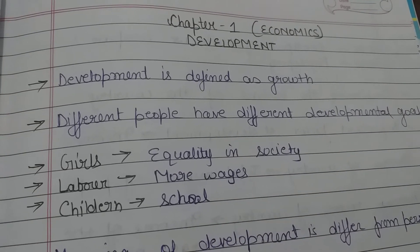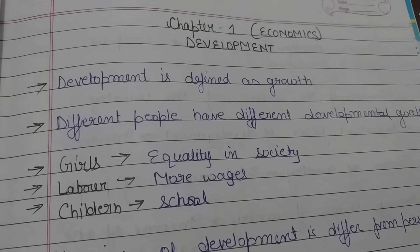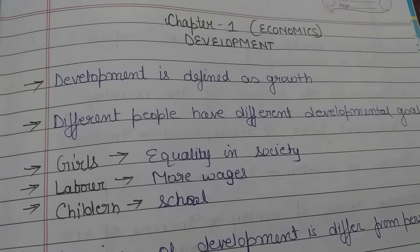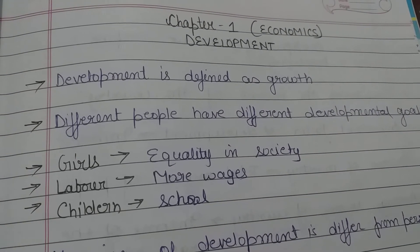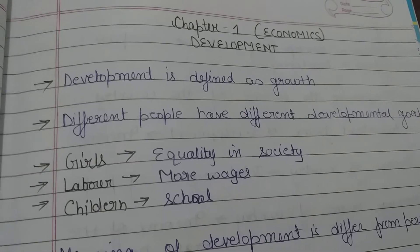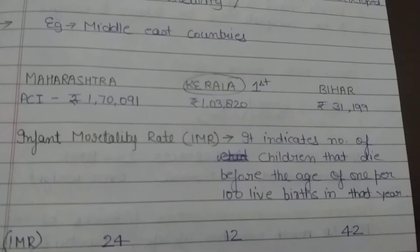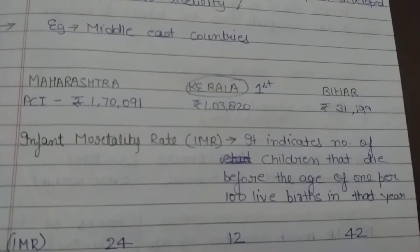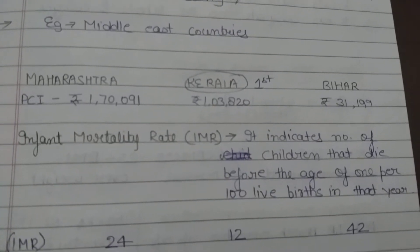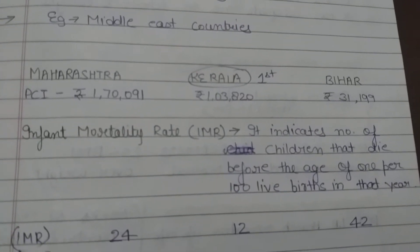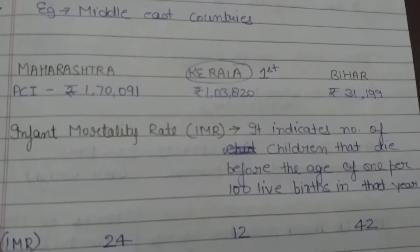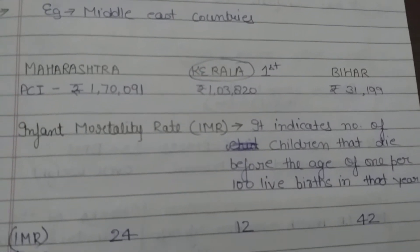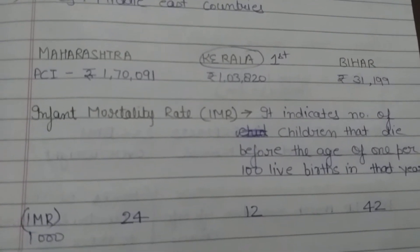Jai Instruments. Today we will discuss the remaining topics of Chapter 1 of Economics Development. We will discuss about three states: Maharashtra, Kerala, and Bihar.